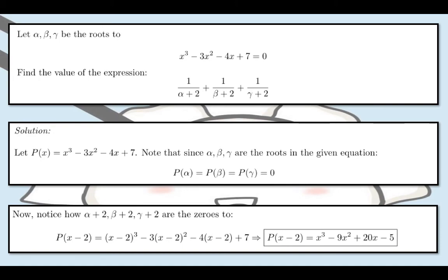Now, notice how α+2, β+2, γ+2 are the zeros to P(x-2). Because if we substitute x as α+2, β+2, or γ+2, the results are α, β, and γ respectively. α+2-2 = α, β+2-2 = β, and γ+2-2 = γ.